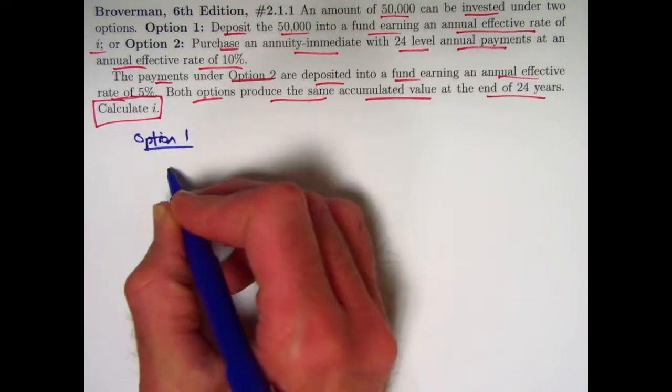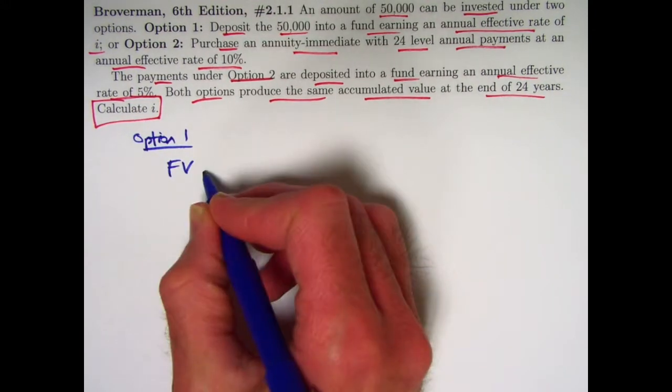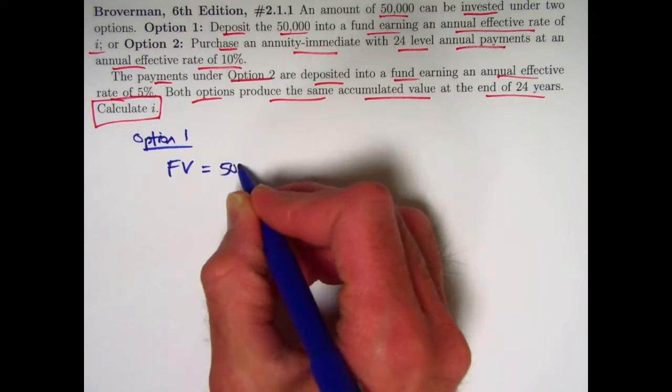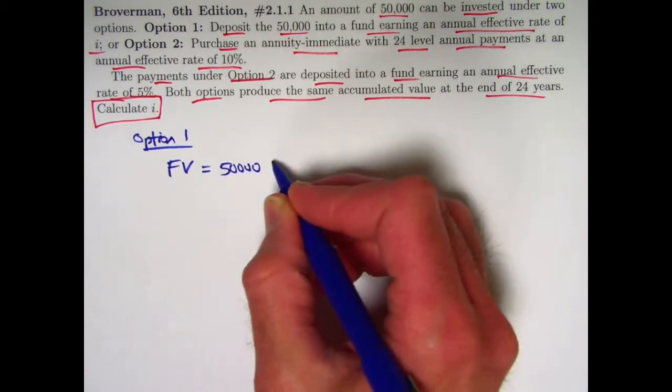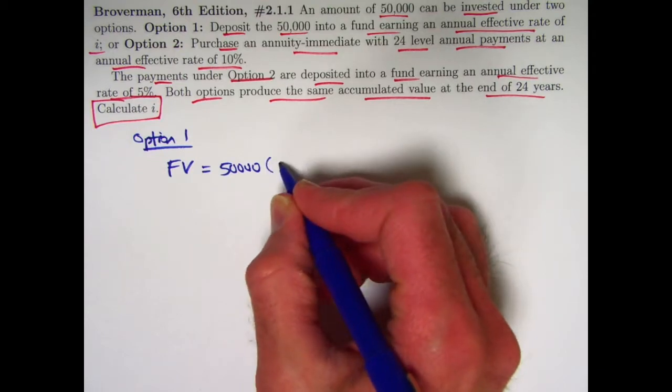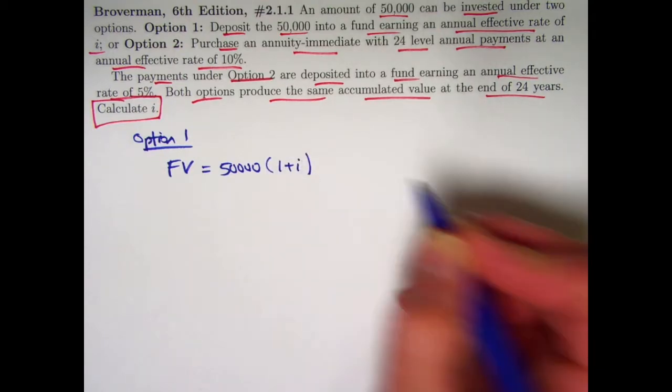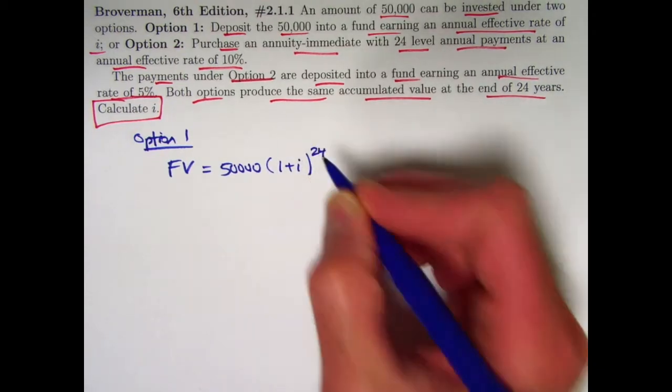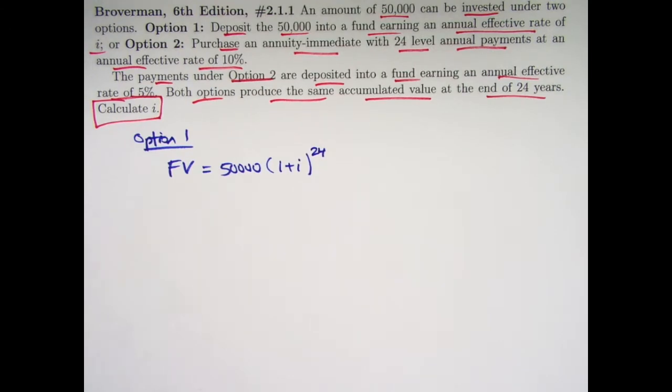Option one, what is the future value? That's fairly simple. $50,000 is the deposit. It's earning an annual effective interest rate I for 24 years. Symbolically, this is the future value for option one. We don't know I yet. We want to solve for I.